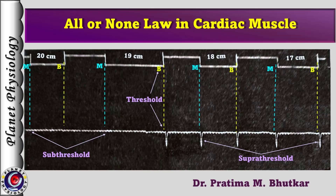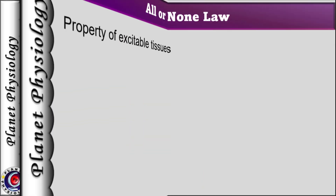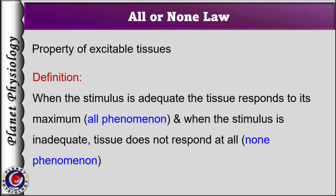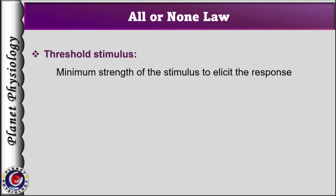First, let us know what is the All or None Law. It is the property of excitable tissues like nerve and muscle. It states that under given conditions, when the stimulus is adequate, the tissue responds to its maximum — the 'all' phenomenon. Adequate stimulus is the threshold stimulus, defined as the minimum strength of stimulus that elicits a response from the tissue.